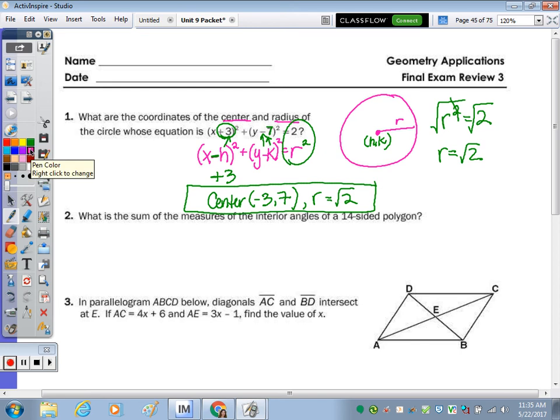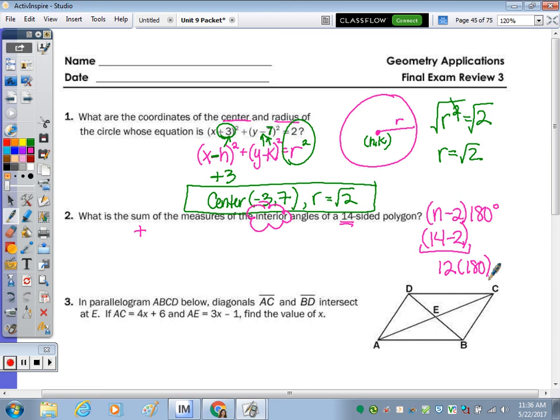Next one, what is the sum of the measures of the interior angles of a 14-sided polygon? There's a formula: (n - 2) times 180. Plugging in the 14, 14 minus 2 is 12, and 12 times 180 equals 2160 degrees. Make sure you include your unit.